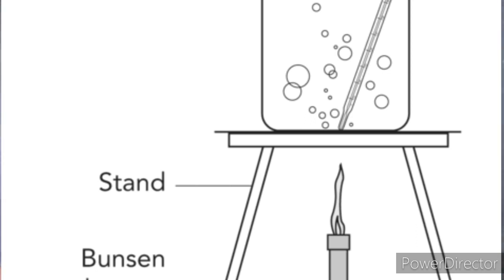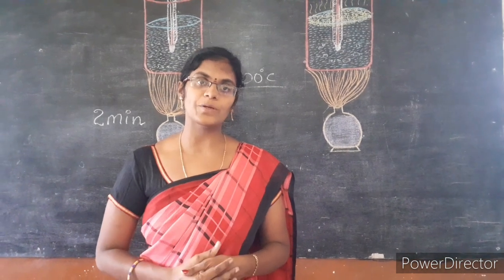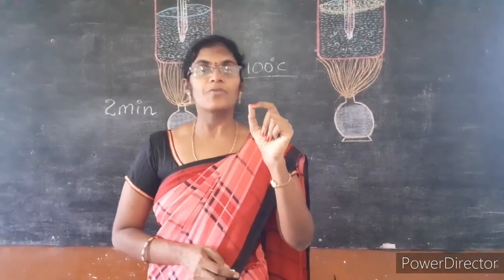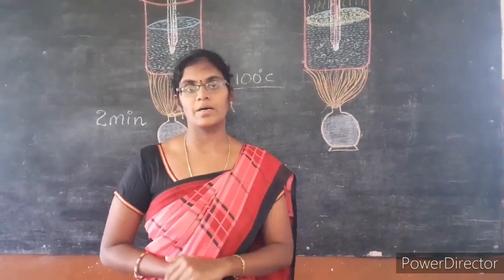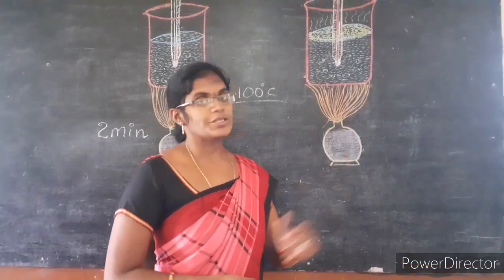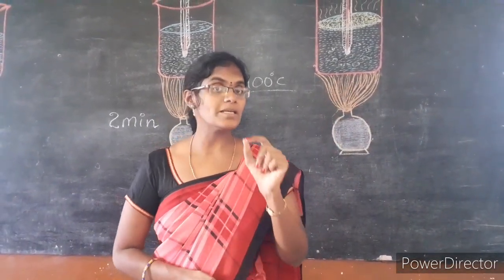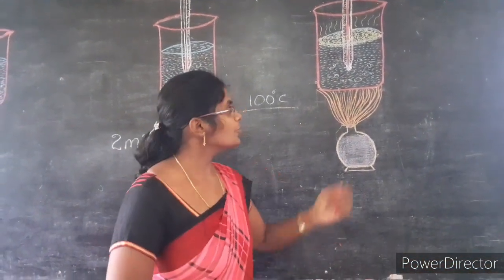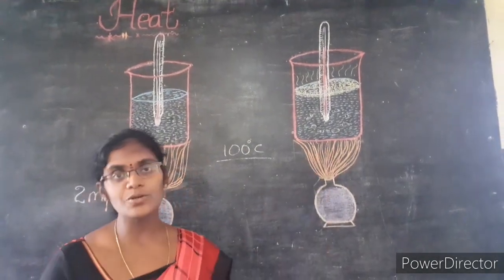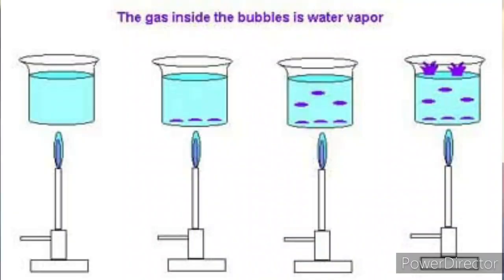These bubbles are completely filled with saturated vapor — that is, vapor in equilibrium at constant temperature and pressure. When we supply heat energy continuously, the pressure of the saturated vapor increases until it equals atmospheric pressure.